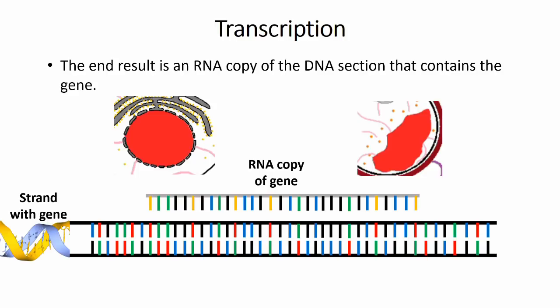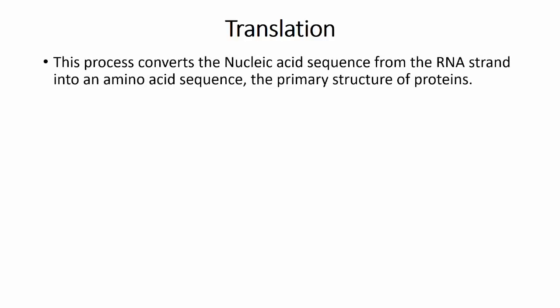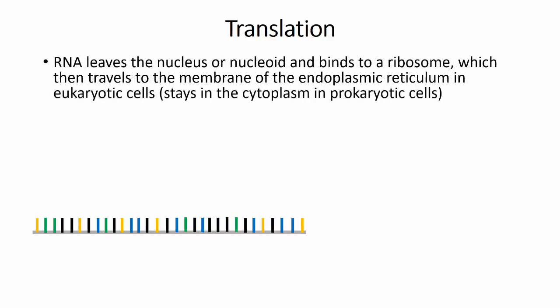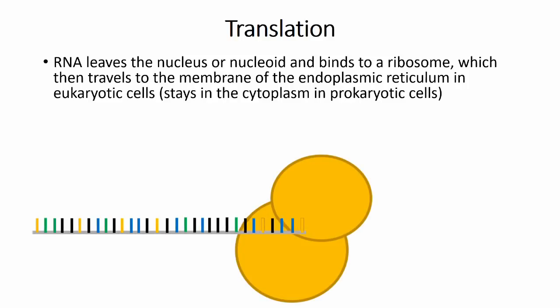The RNA strand leaves and moves to the cytoplasm to undergo translation, where it is converted into an amino acid sequence which is the primary structure of proteins. Translation begins when the RNA strand enters the cytoplasm from the nucleus or nucleoid and attaches to a ribosome. This ribosome will then either remain in the cytoplasm in prokaryotic cells or move and attach to the membrane of the endoplasmic reticulum in eukaryotic cells.